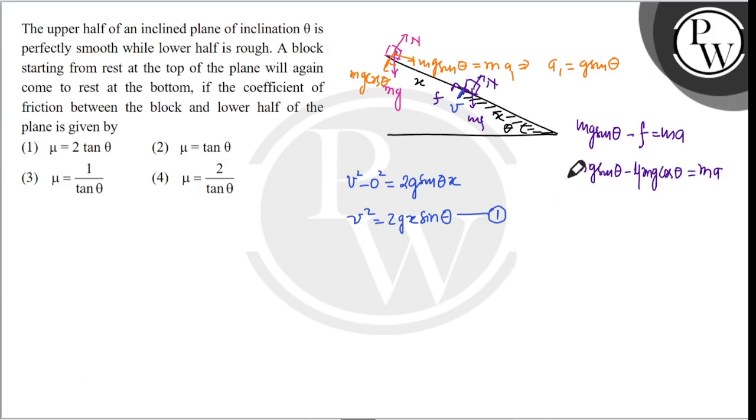Canceling m from both sides, the acceleration equals g sin θ - μg cos θ.